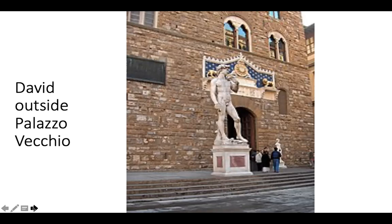At some point within the same timeframe of his being placed, three additions were made to the David. The tree stump behind David's right leg was gilded in gold, the sling was also gilded in gold, and a gilded gold garland was supposedly added to cover his loins — addressing the nudity. So his modesty was increased.